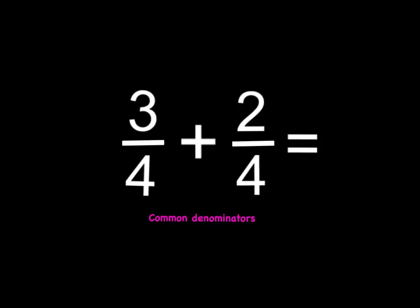When you look at a fraction addition problem, the first thing you need to look at is the denominator. Remember that the denominator is the bottom number of the fraction and tells how many pieces there are in all. In this example, 3 fourths plus 2 fourths, there is a common denominator. The common denominator in this problem is 4. You do not need to do any more work if there is already a common denominator.